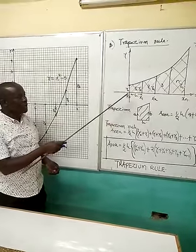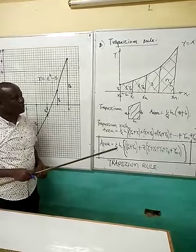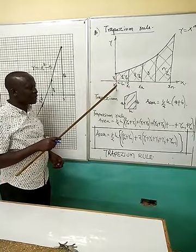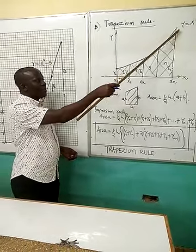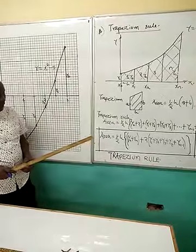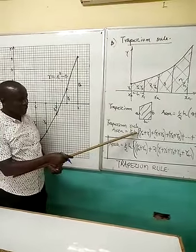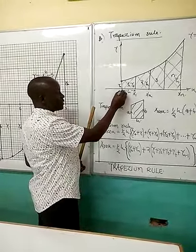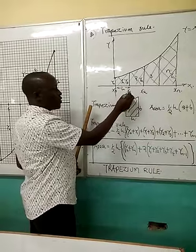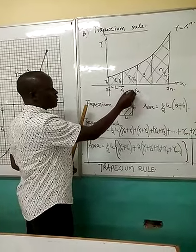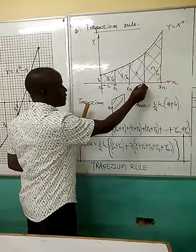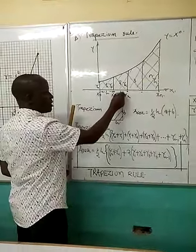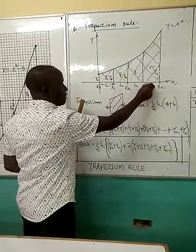And then if you want to get the area of this figure bound by this curve, the line x equals 0 and the line x equals n, then I want to get my h. And the h here is simply the distance from the first x value to the second, or the second x value to the third, or the third to the fourth, up to the last x. And this h here must be constant.